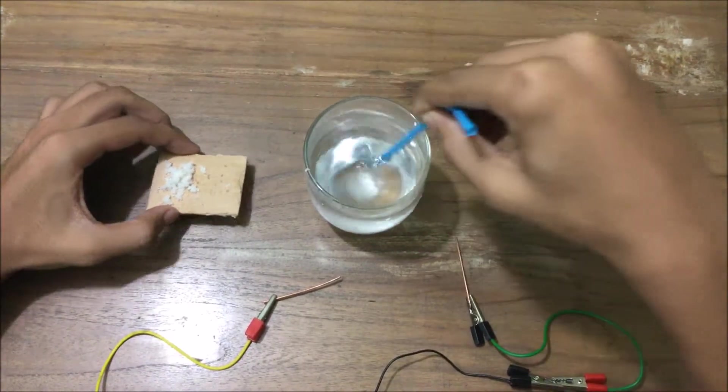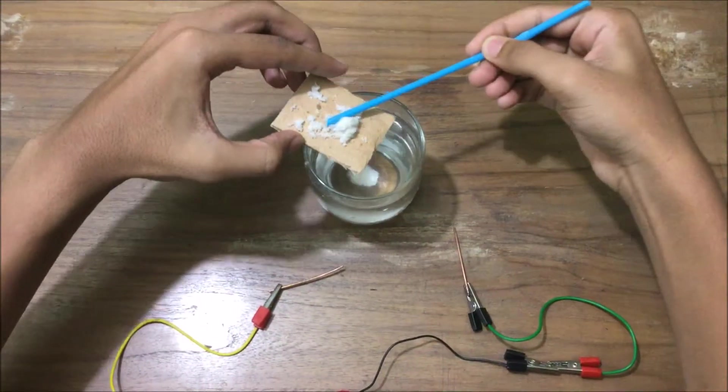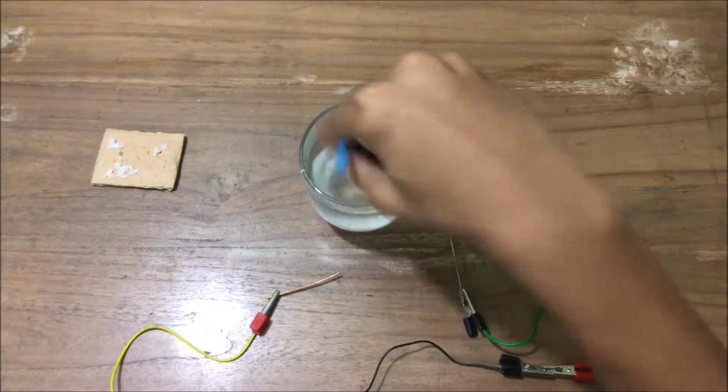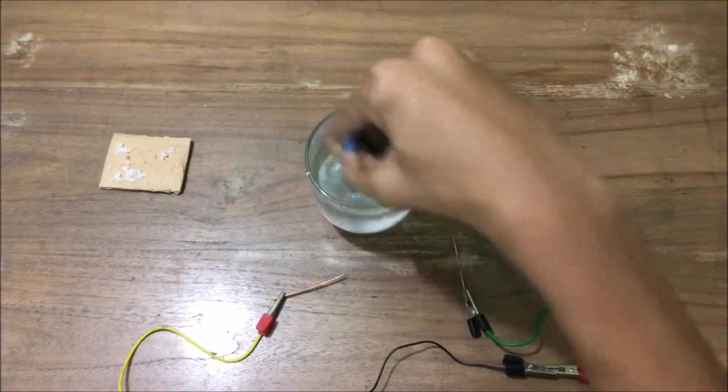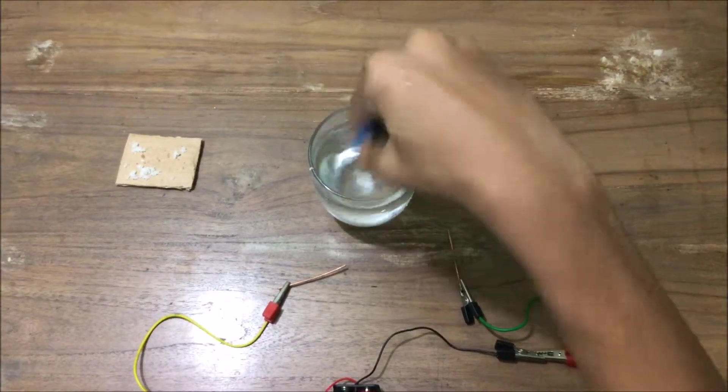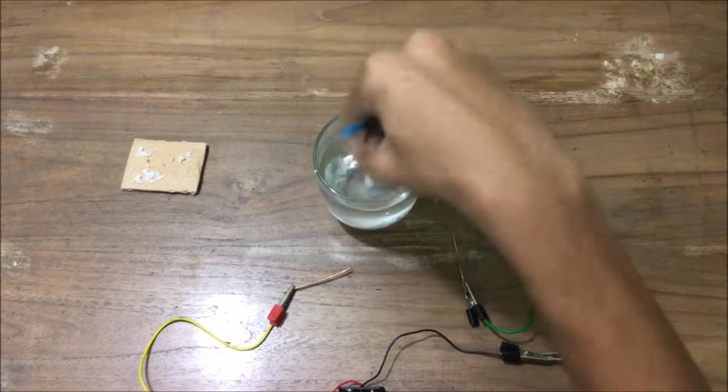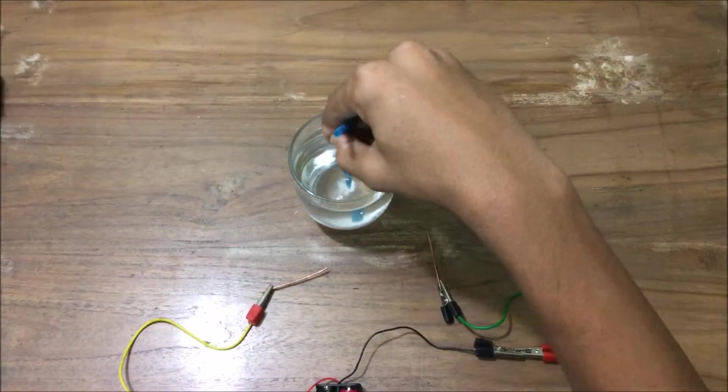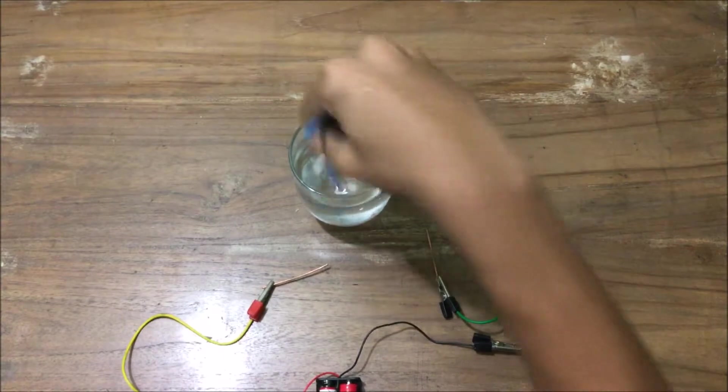Now we know that salt is a substance which is known by the chemical name sodium chloride, which has the sodium metal and chlorine gas bonded together. Now a little funny thing will happen when we do this experiment.